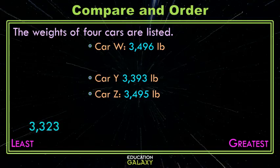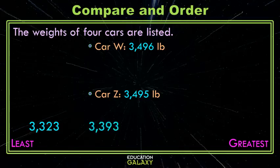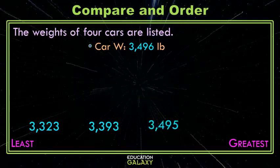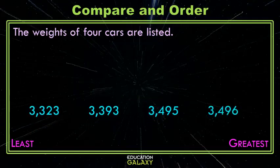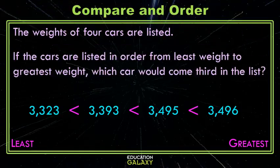We just discussed that the three is smaller than the fours, so that makes this one next in my lineup. Now I just have these last two to compare. We know we have a three in both thousands, a four in both hundreds, and a nine in both tens places, so I'm down to the ones, where I have a six and a five. The five is the smallest, which makes that number next in our lineup, which makes 3,496 the greatest. So what was the original question? Which one is third in the lineup? And that is 3,495.